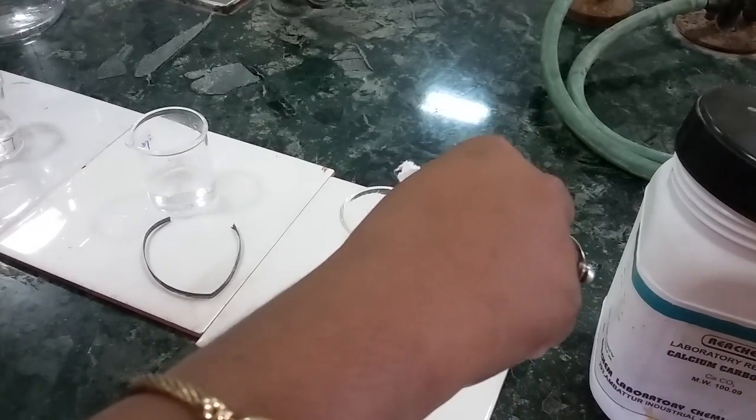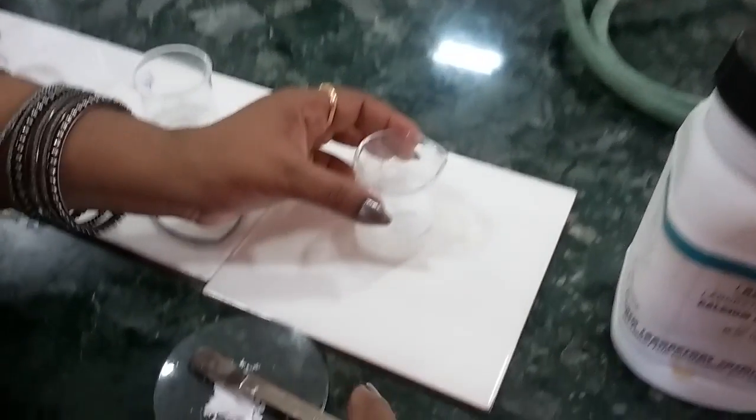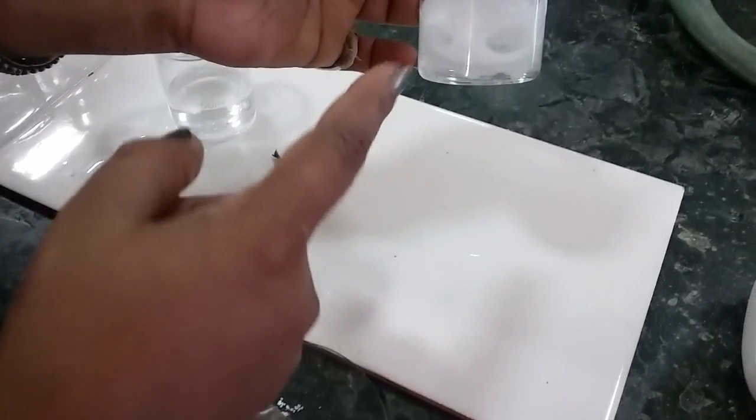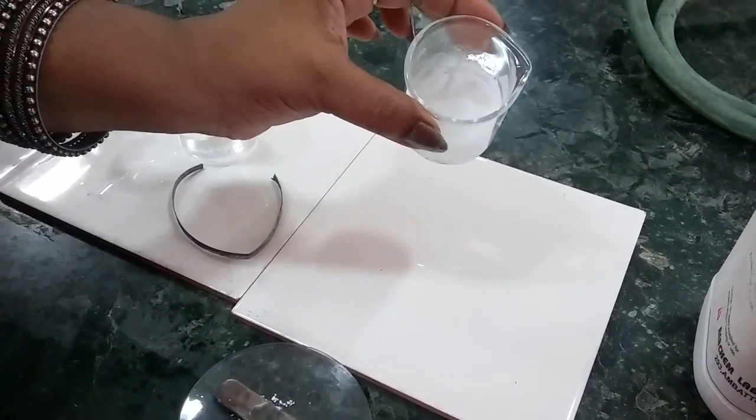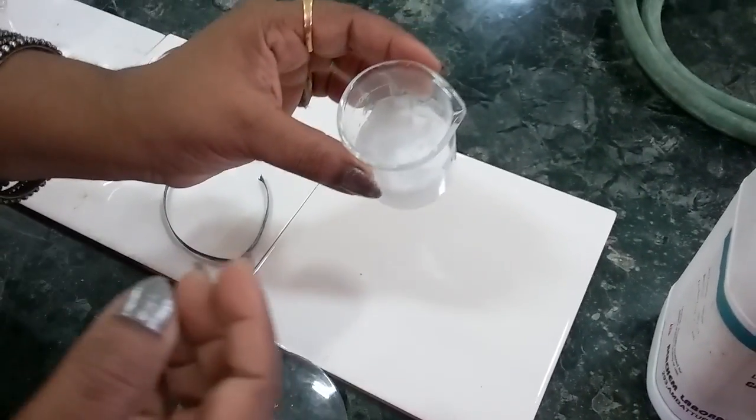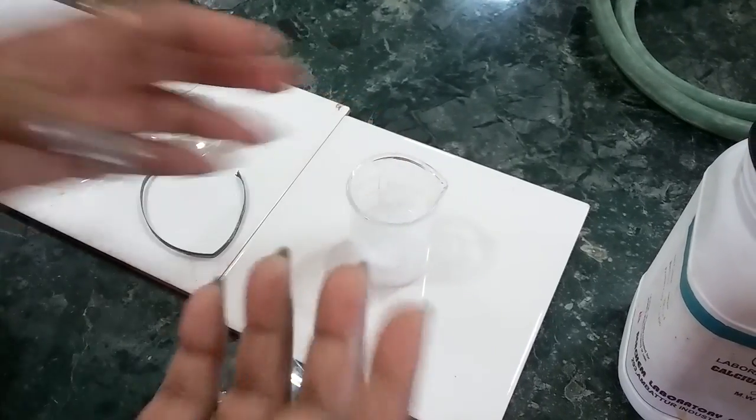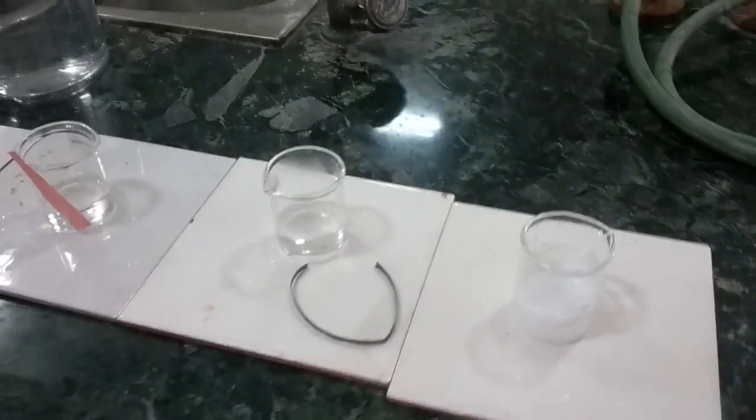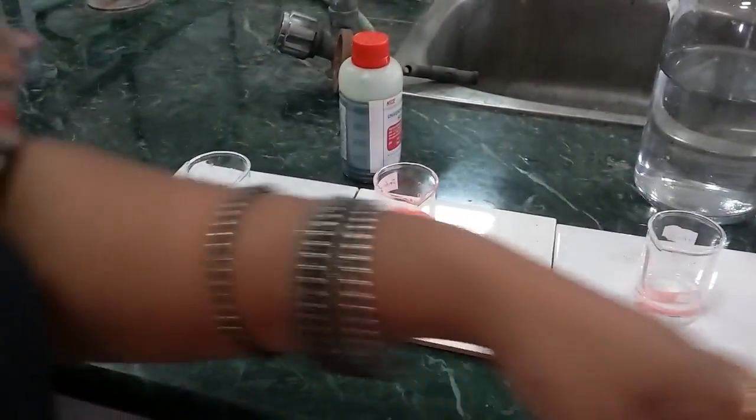you will see brisk effervescence. Can you see the brisk effervescence? The brisk effervescence shows it evolves carbon dioxide. These are all the tests for sulfuric acid or any acid.